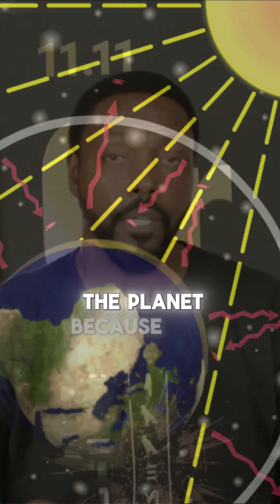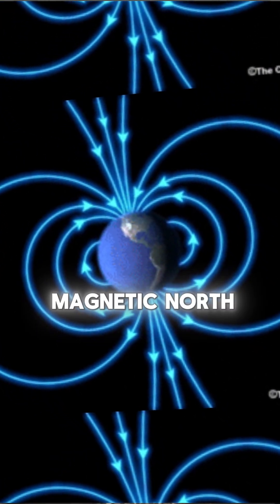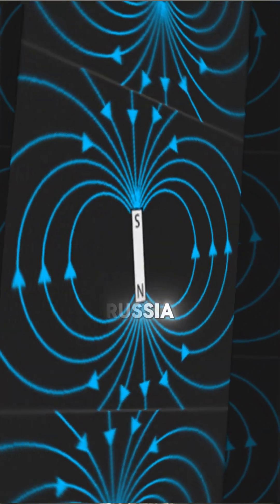And the magnetic north has begun to move. And where is it now? Magnetic north has now moved over Russia. It's actually just now beginning to pass Russia.